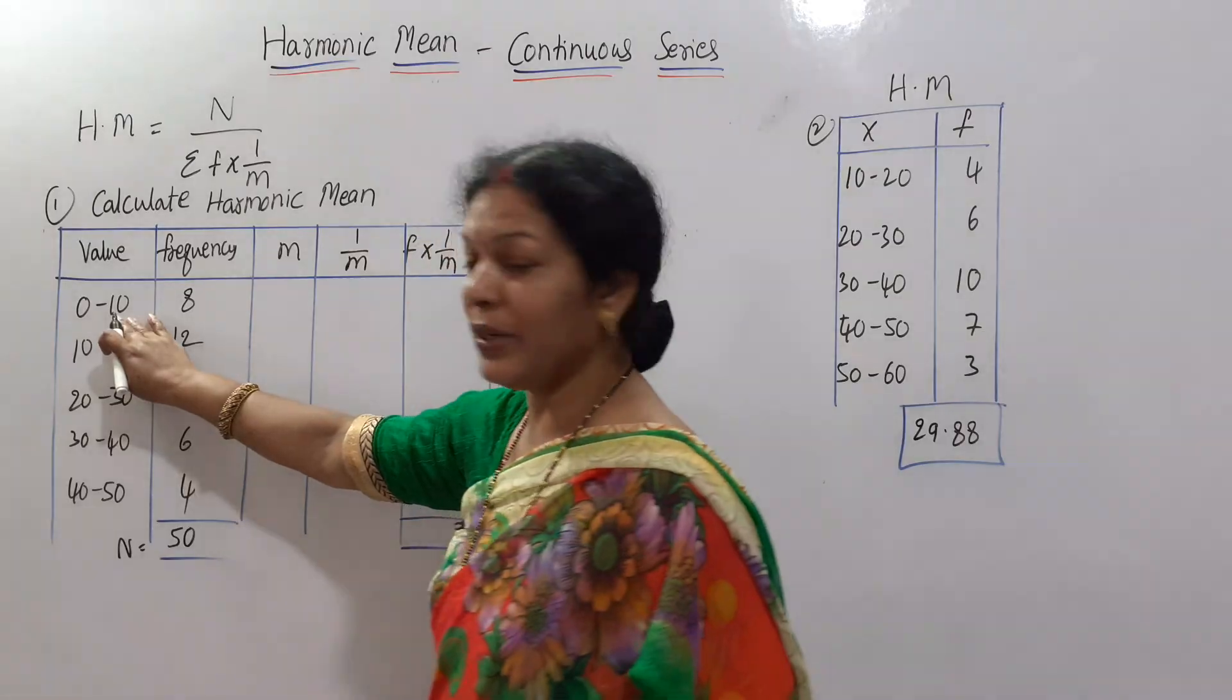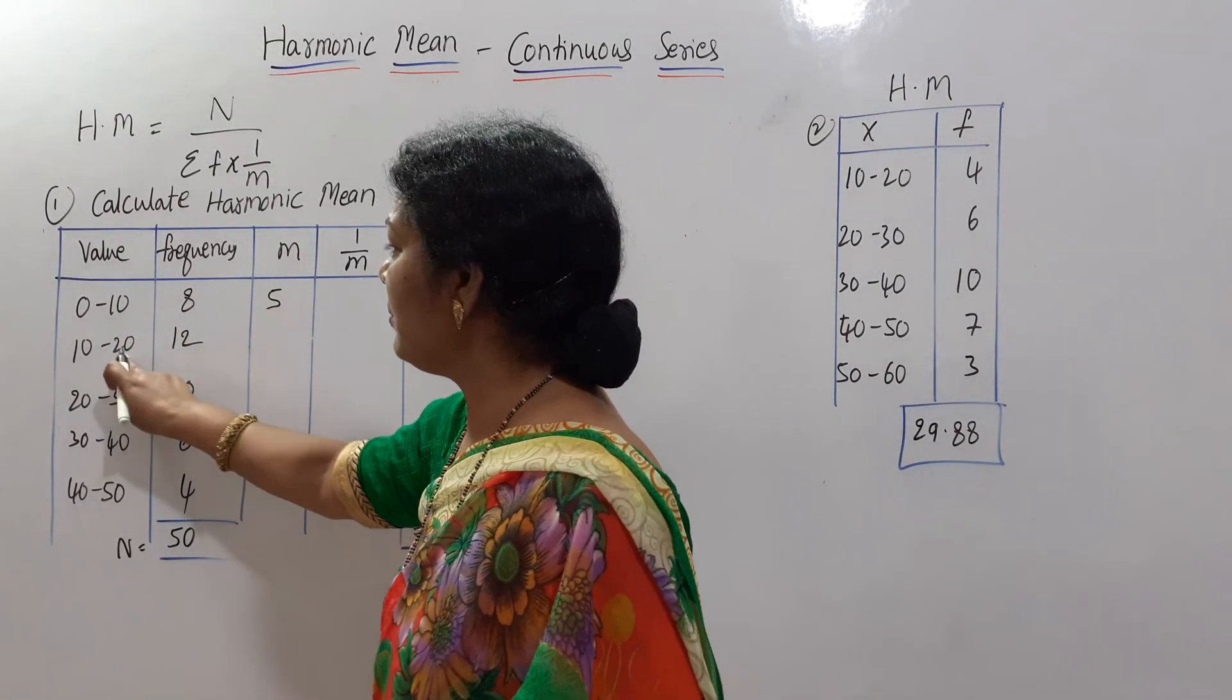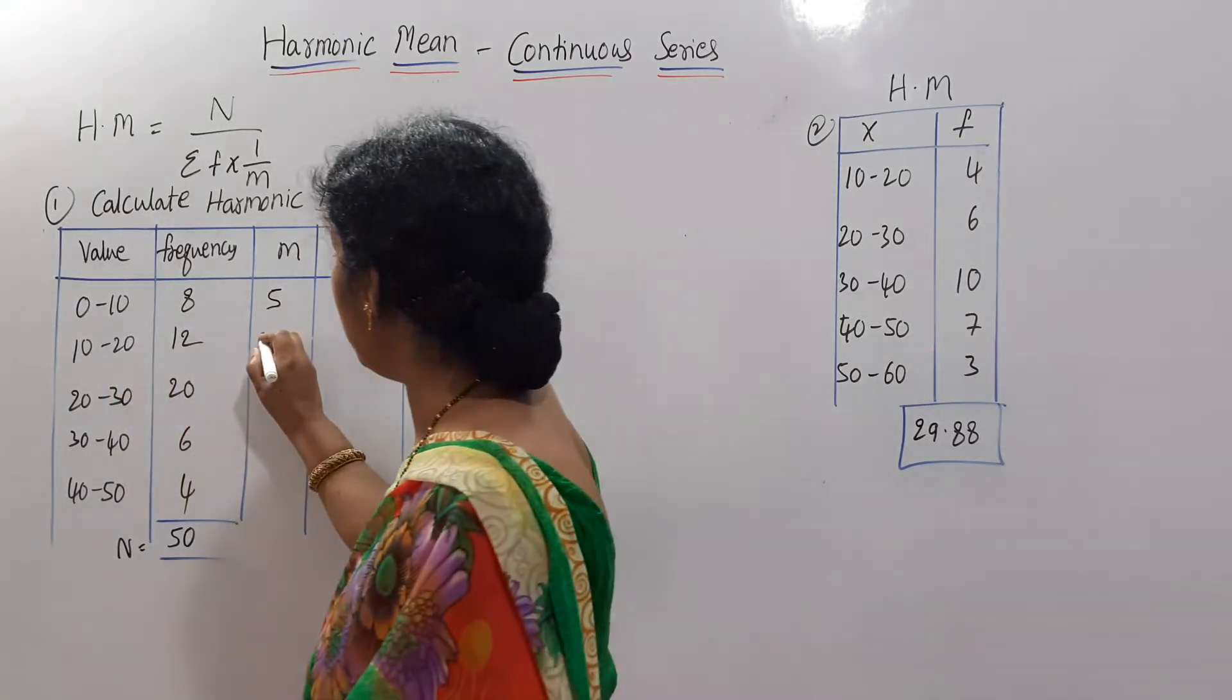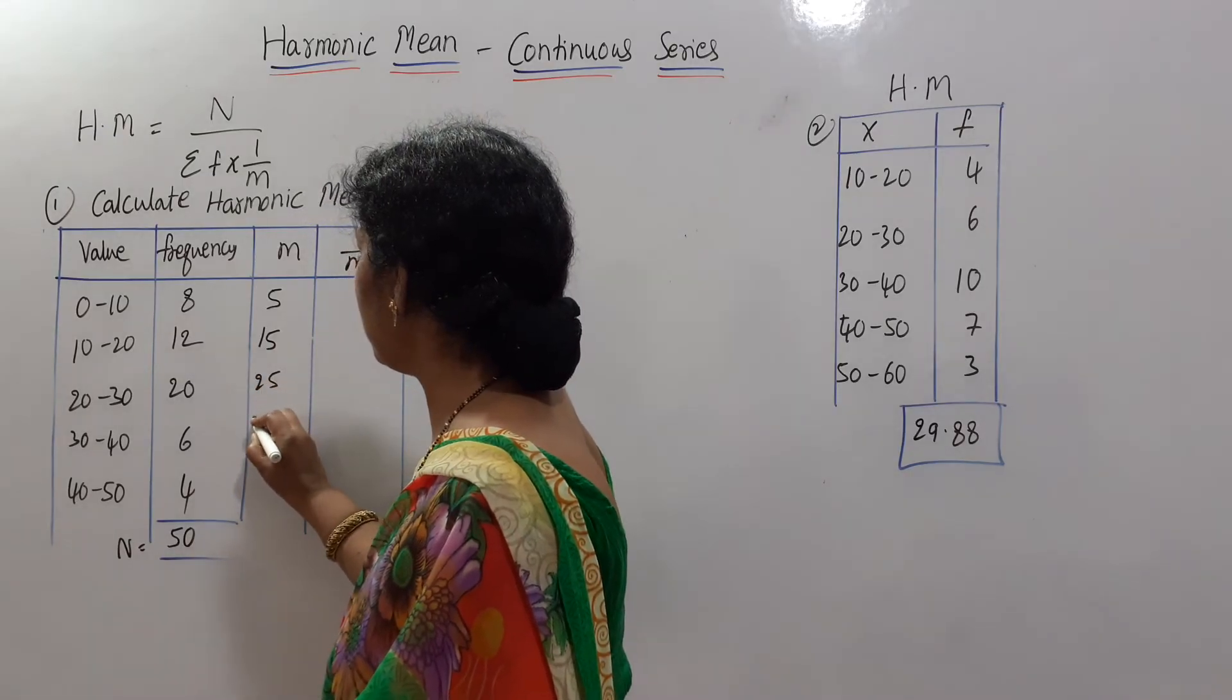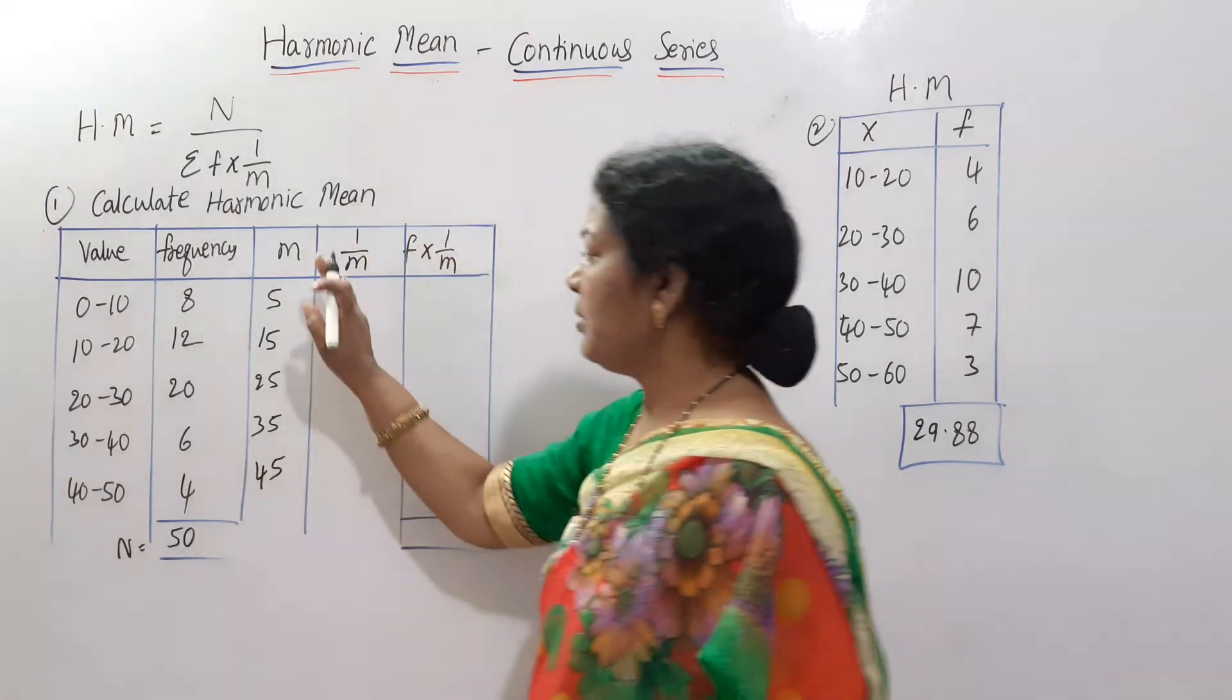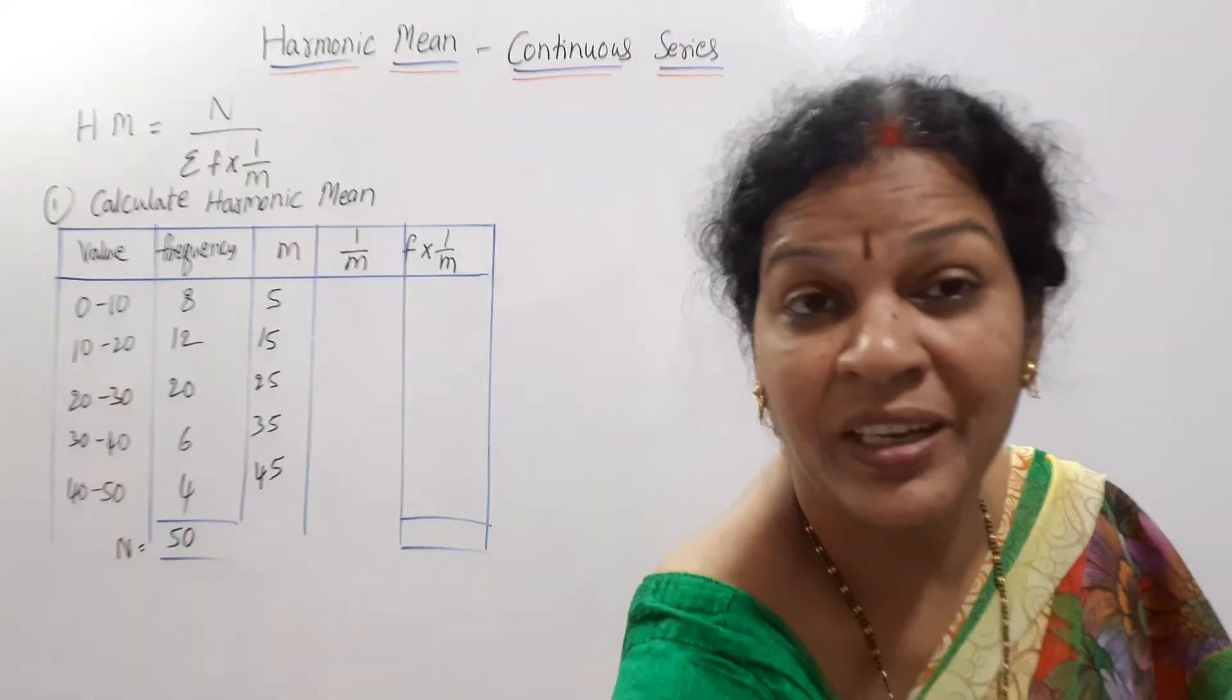Shall we go ahead? First we need mid value. So mid value is here: 0 plus 10, 10 divided by 2 is 5. In the same way, if we add 30, 30 divided by 2 is 15, then 25, 35, 45. Mid value you got it.